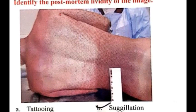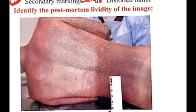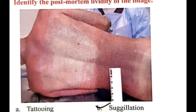The next question asks to identify the post-mortem lividity shown in the image. You can see a bluish-purple or purplish-red discoloration of the skin, which is suggestive of post-mortem hypostasis, also called suggillation.